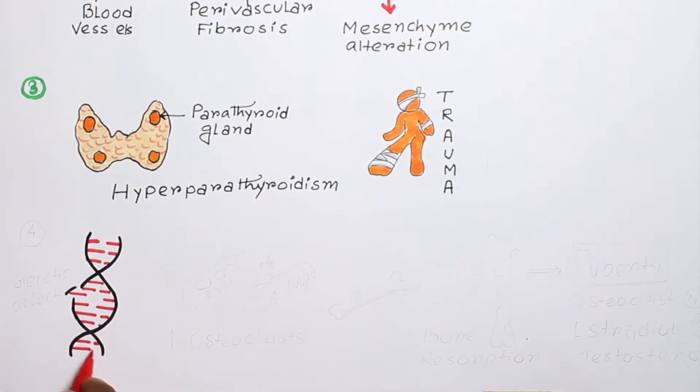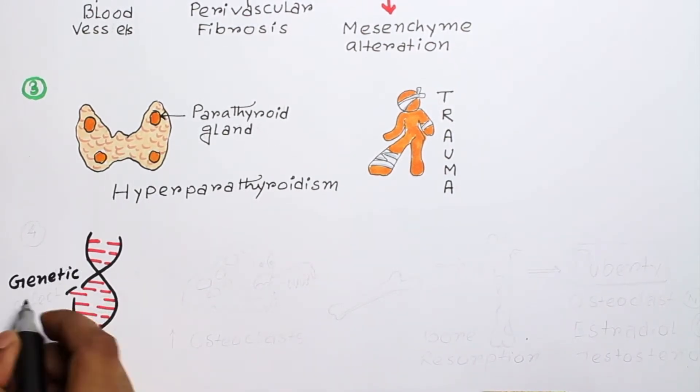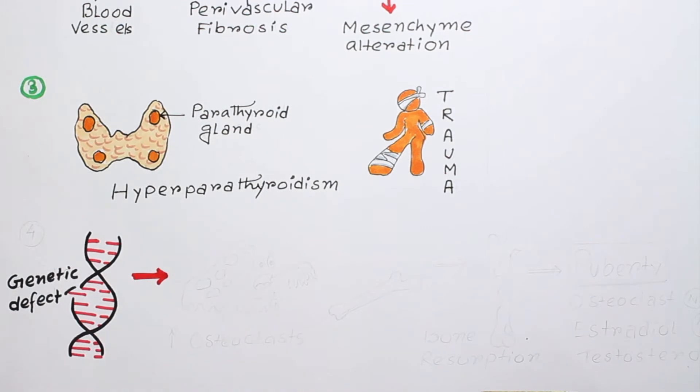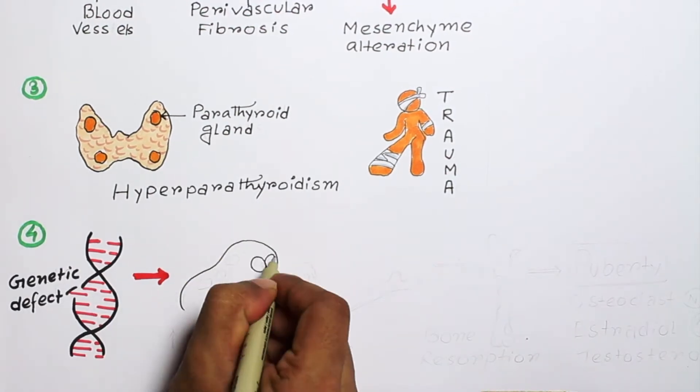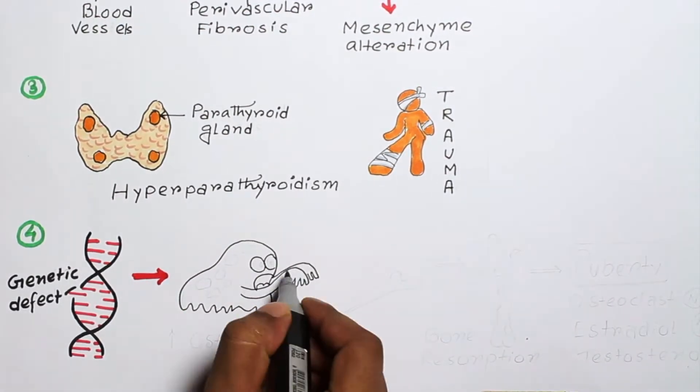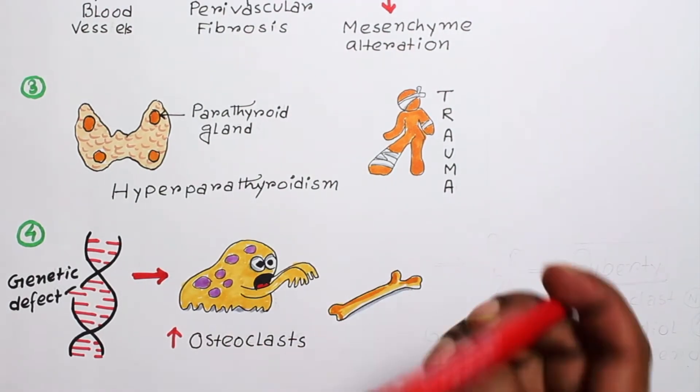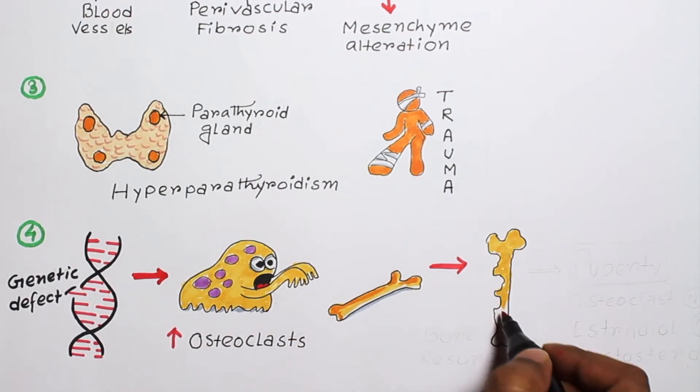Recent studies have shown that the genetic defect characteristic of Cherubism is responsible for the localized increase in osteoclasts, which cause bone resorption and are responsible for the radiolucent lesion.